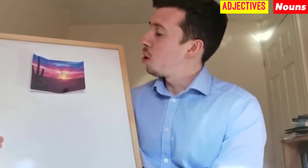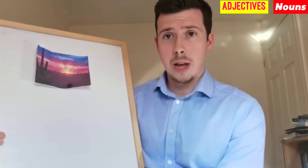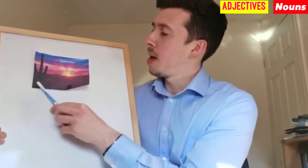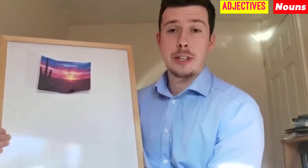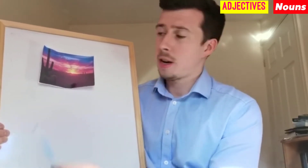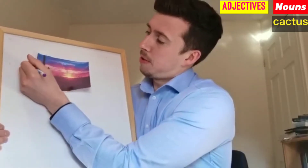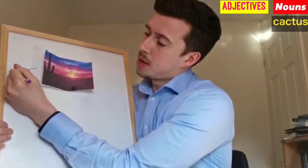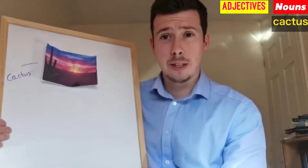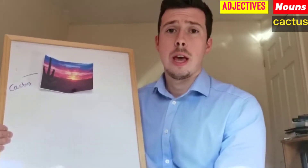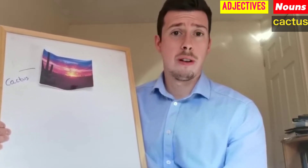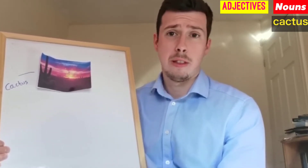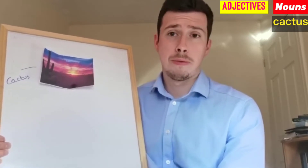Now I'm going to show you exactly what to do. You look at the image and identify the nouns within it. This is an image of a desert. I'm using a whiteboard, but you do not need one — all you really need is a piece of paper, or even the back of a cereal box. You don't even have to write it down.